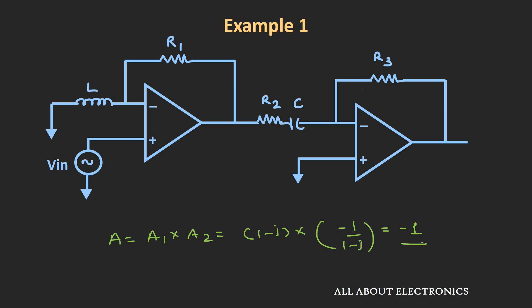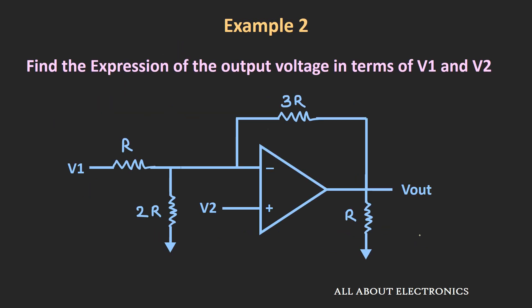Now let's see the second example. In this example, we have been asked to find the output voltage in terms of V1 and V2. If you see this circuit, the input is applied at both inverting and non-inverting terminals. To find the output voltage, we will consider only one voltage source at a time and find the output voltage. Later on, we will add the individual responses to get the final output.